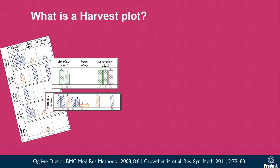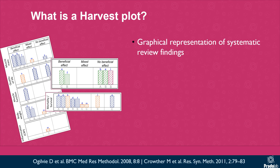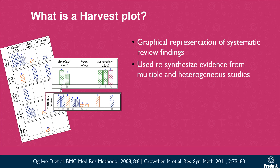What is a harvest plot? It is a graphical representation of findings from systematic reviews. It is used to synthesize evidence from multiple and heterogeneous studies, particularly when meta-analysis cannot be performed.